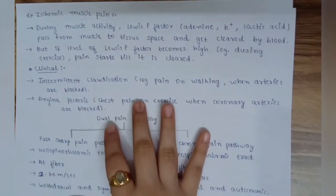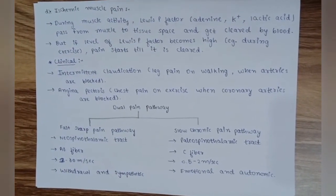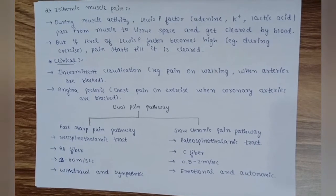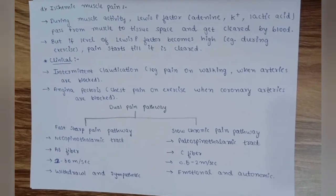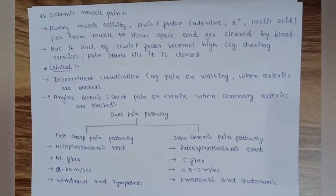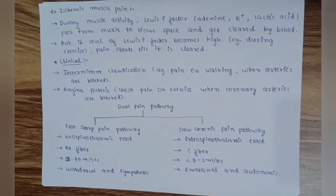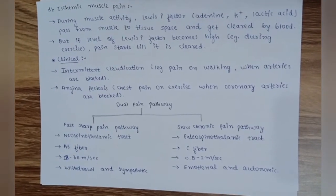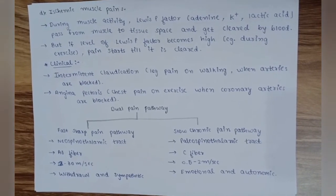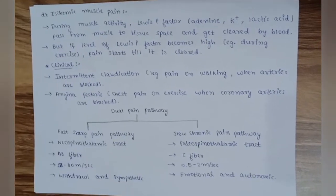Systemic muscle pain: during muscle activity, P factors like adenine, K+, and lactic acid pass from muscle to tissue space and are cleared by blood. If the level of these P factors becomes high — for example during exercise — pain starts until they are cleared. Clinical examples: intermittent claudication (pain on walking when arteries are blocked) and angina pectoris (chest pain on exercise when coronary arteries are blocked).